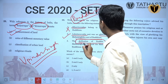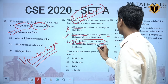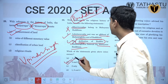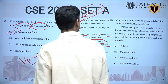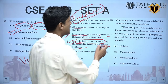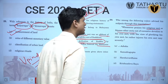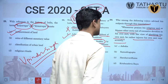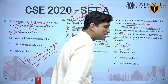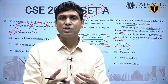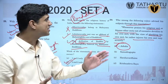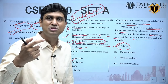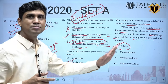Who among the following rulers advised subjects through this inscription: 'Whoever praises his own sect or blames others out of excessive devotion, rather injures his own sect very seriously'? Asoka was the person who talked extensively about respecting other sects, tolerance, and his concept of Dhamma. So the answer is Asoka. We've also seen a question about Ranyo Ashoka earlier, confirming Asoka is repeatedly asked by UPSC.